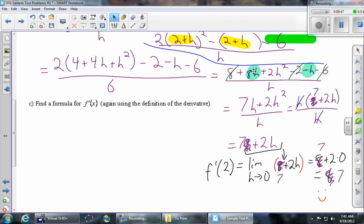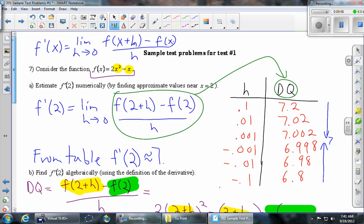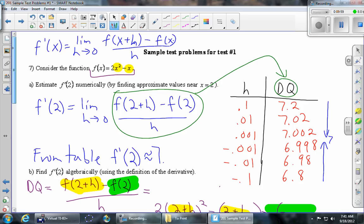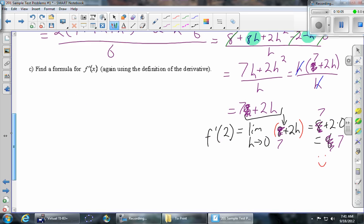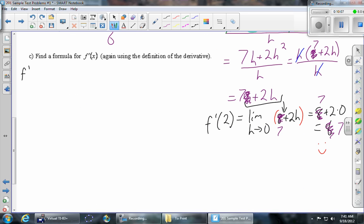Let's move on to part C. Find a formula for f'(x), again using the definition of the derivative. So we'll go ahead and use the formula that I wrote at the top. f'(x) equals all that stuff. Same thing we just did, but instead of f(2 + h), it's going to be f(x + h). And instead of f(2), it's going to be f(x). f'(x) is the limit as h goes to 0. f(x + h) - f(x) divided by h.